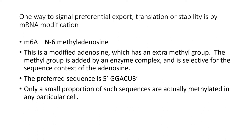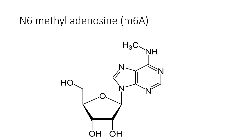The other regulatory mechanism is m6A — N6-methyl adenosine. We saw m6A as a modification at the five-prime end as part of the cap structure, but this modified adenosine can also occur at other internal locations within the mRNA, where a methyl group is added to selective adenosines. This can have a myriad of effects on the final fate of the RNA. The preferred sequence context is GGACU, where the central adenosine is methylated, but only a small proportion of such sequences are actually methylated.